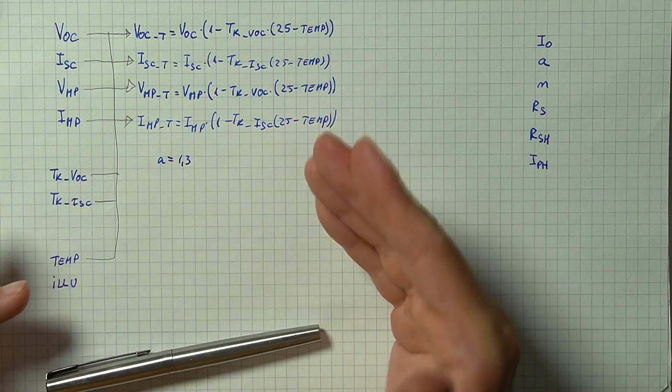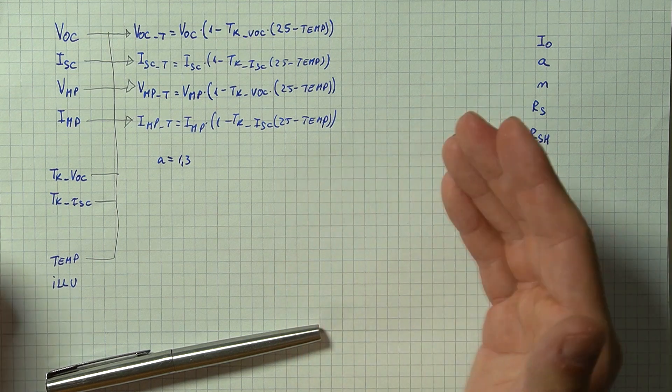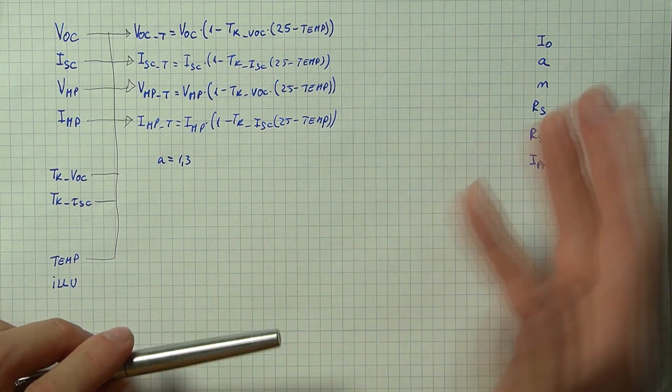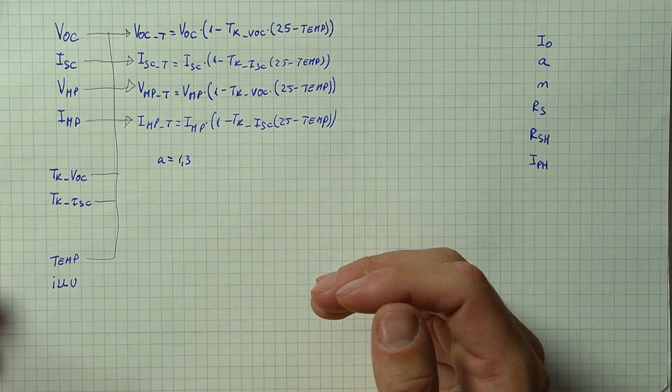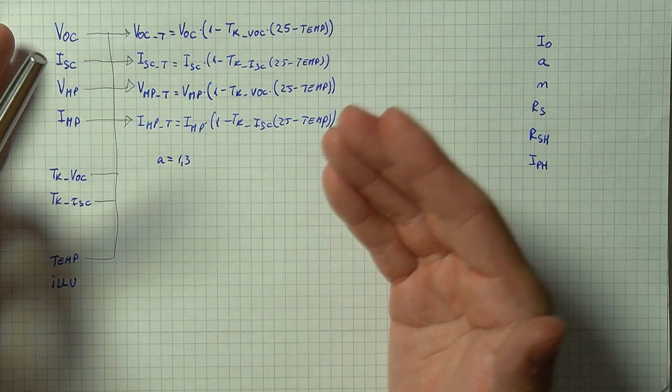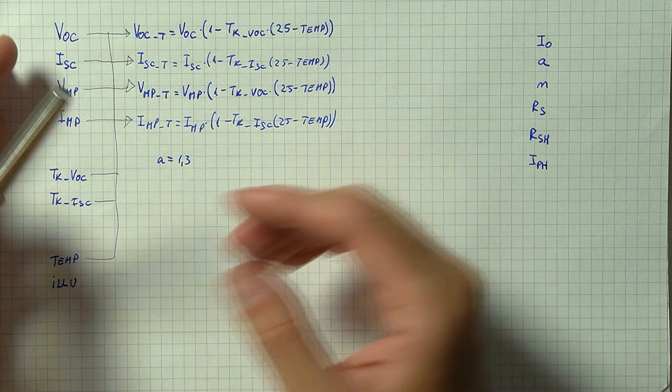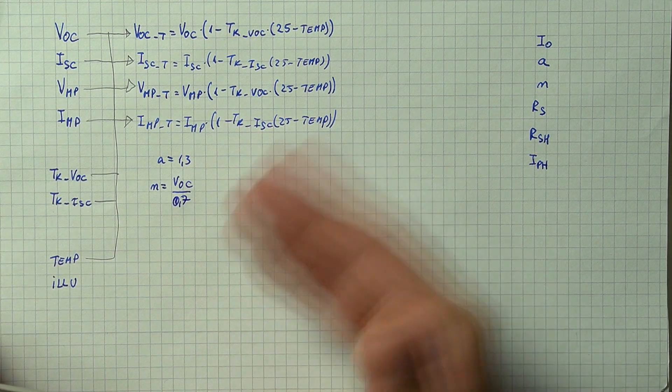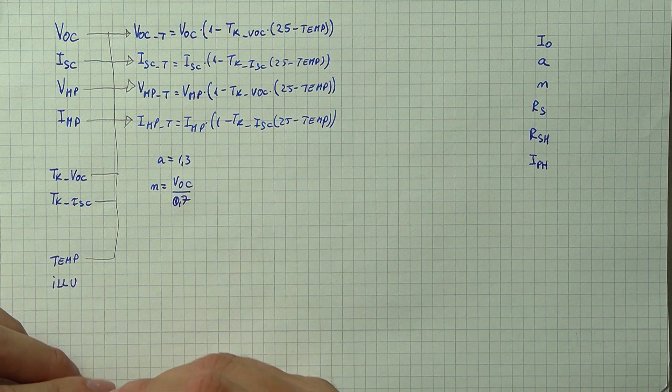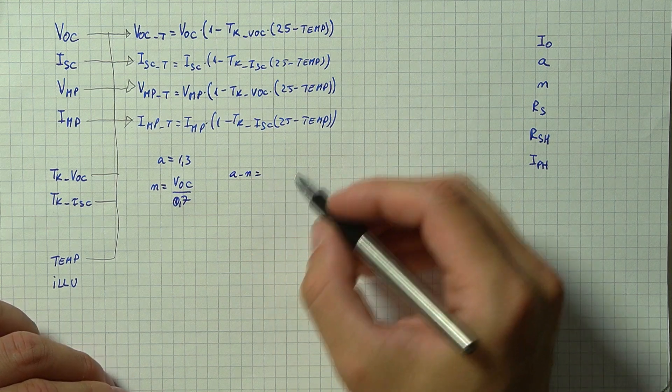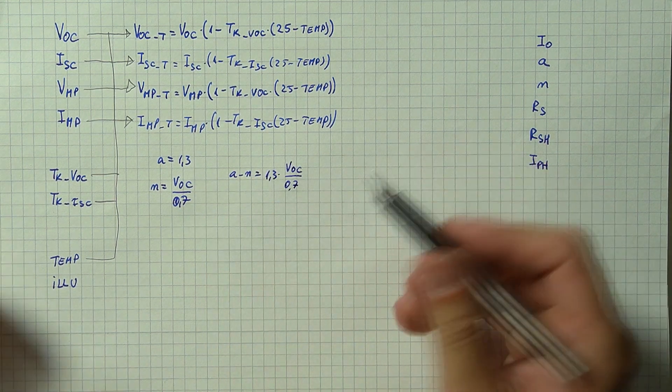Now regarding the other parameters, starting off with the A ideality factor we can simply give it a value of 1.3 since usually this is quite a common value found in various research papers. For the number of cells if we don't really know what's going on inside of the panel we can take the open circuit voltage and simply divide it by about 0.7, the typical forward voltage of a silicon diode. And since both of these parameters are usually used together in calculations we can turn them into a single parameter which we can call An and this will be equal to 1.3 times the open circuit voltage divided by 0.7.